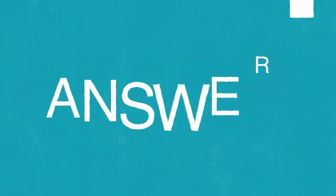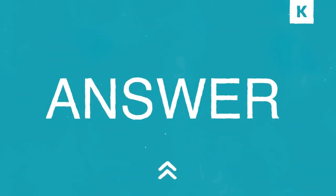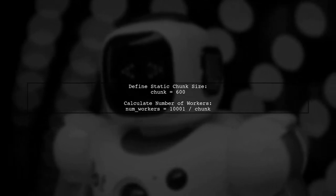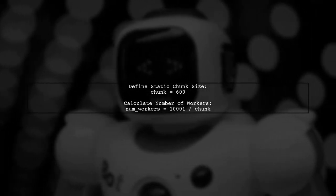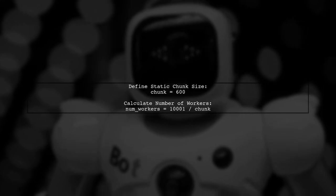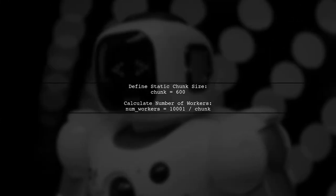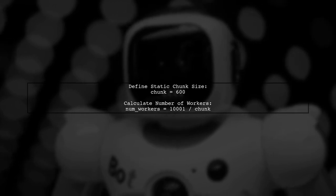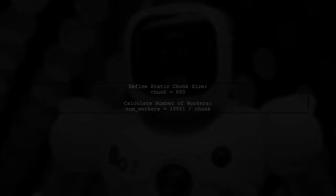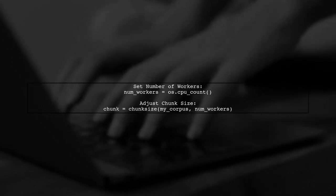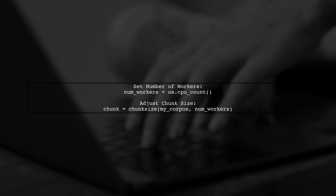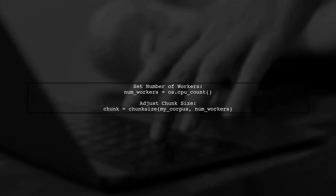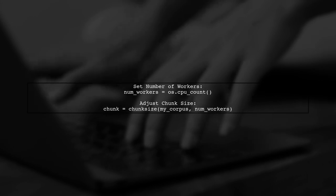Let's now look at a user-suggested answer. To speed up Word Mover's Distance similarity in Gensim using multiprocessing, start by defining a static chunk size, like 600. Then, calculate the number of workers based on your CPU cores. It's best not to exceed the number of CPU cores you have. If you have 17 cores, that's fine — use the CPU count to set your workers and adjust the chunk size accordingly.